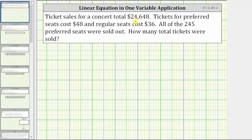Ticket sales for a concert totaled $24,648. Tickets for preferred seats cost $48, and regular seats cost $36. All of the 245 preferred seats were sold out. How many tickets were sold?